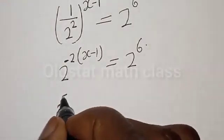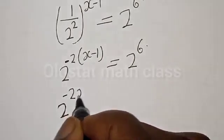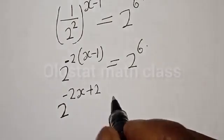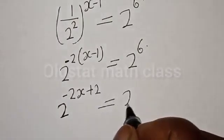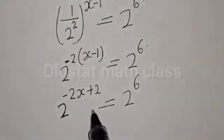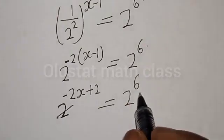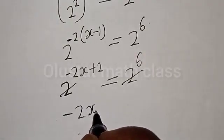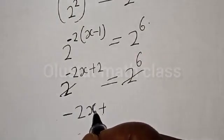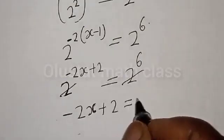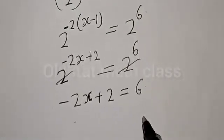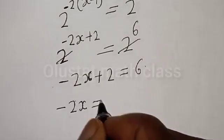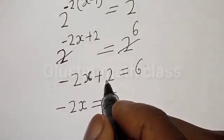Now let's open this bracket. We have 2 raised to power negative 2 times x, minus 2 times 1, that is plus 2, is equal to 2 raised to power 6. Since they have the same base, the bases cancel and we have minus 2x plus 2 is equal to 6.